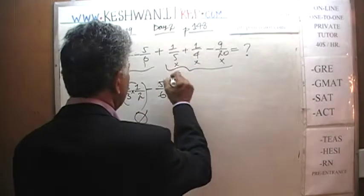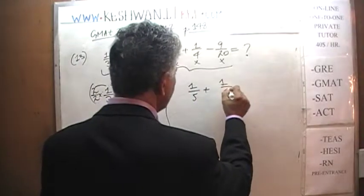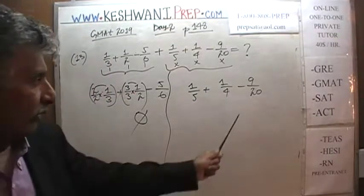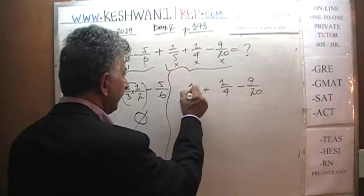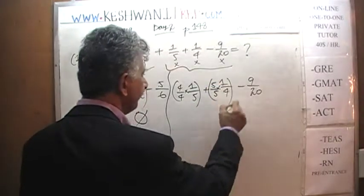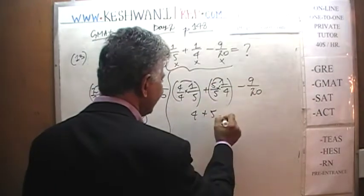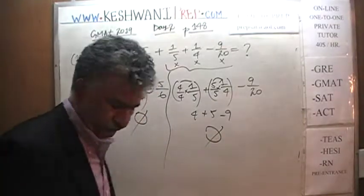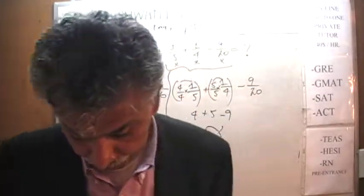Let's work on the second part. We have one-fifth plus one-fourth minus nine-twentieths. The common denominator would be twenty, because twenty is a multiple of both four and five. Multiply the first fraction top and bottom by four, and the second by five over five. We get four times one which is four, five times one which is five, and then minus nine — we're going to get a big fat zero again. So big fat zero plus big fat zero — I'll leave that up to you.